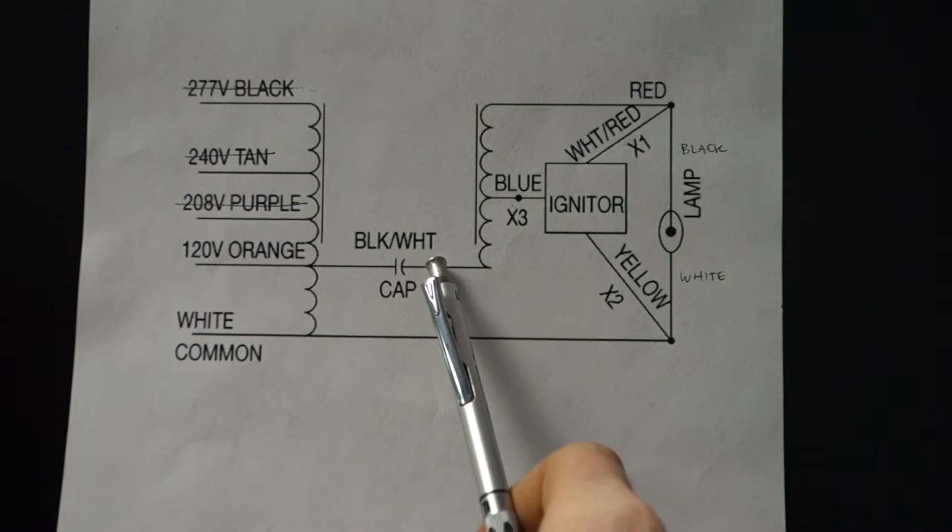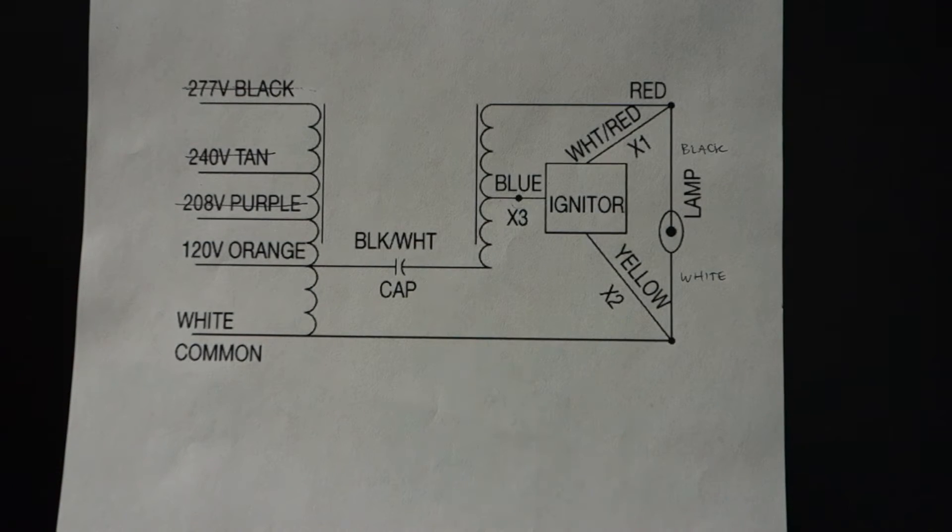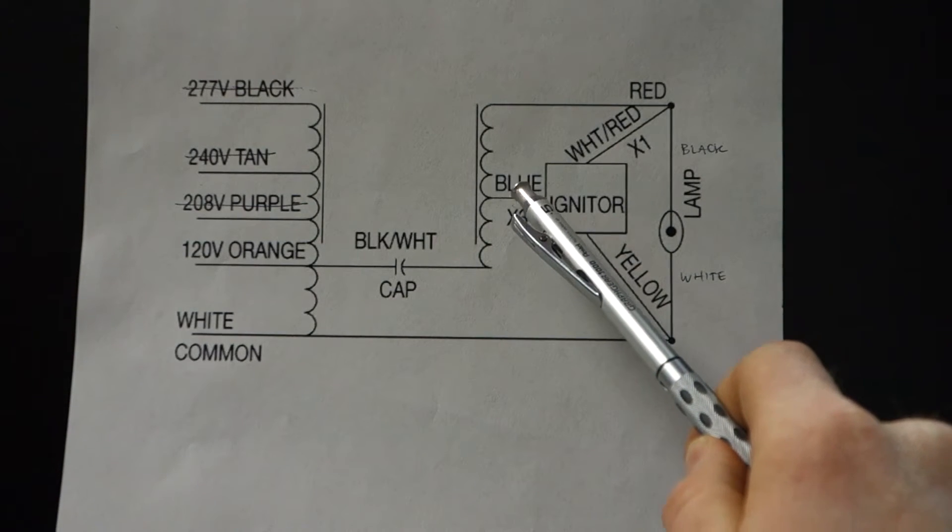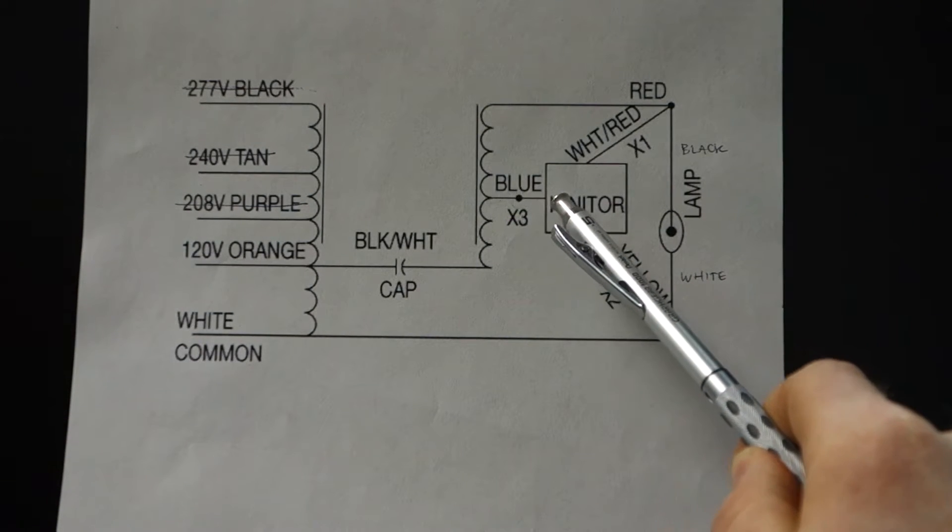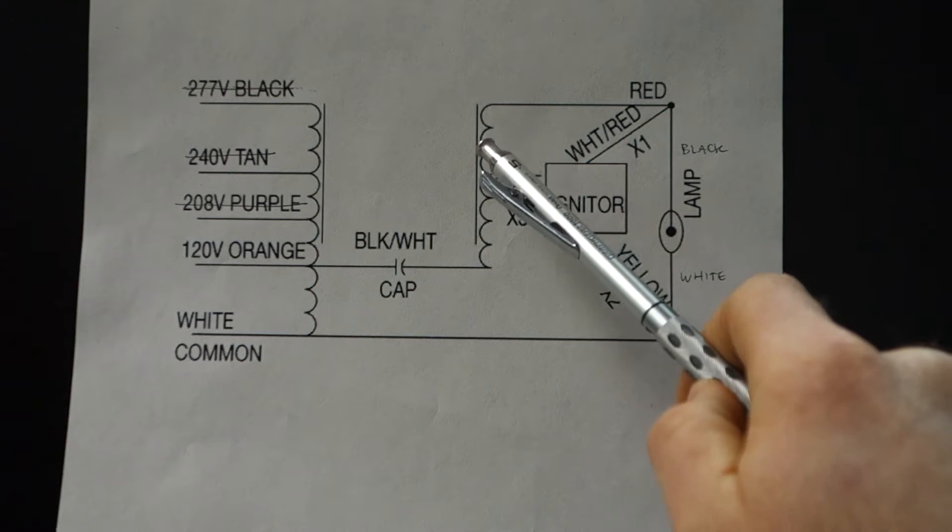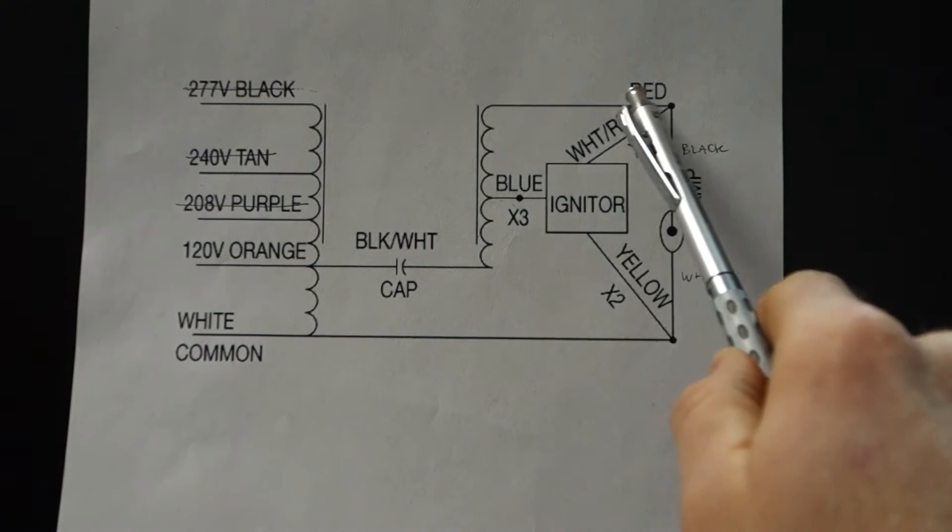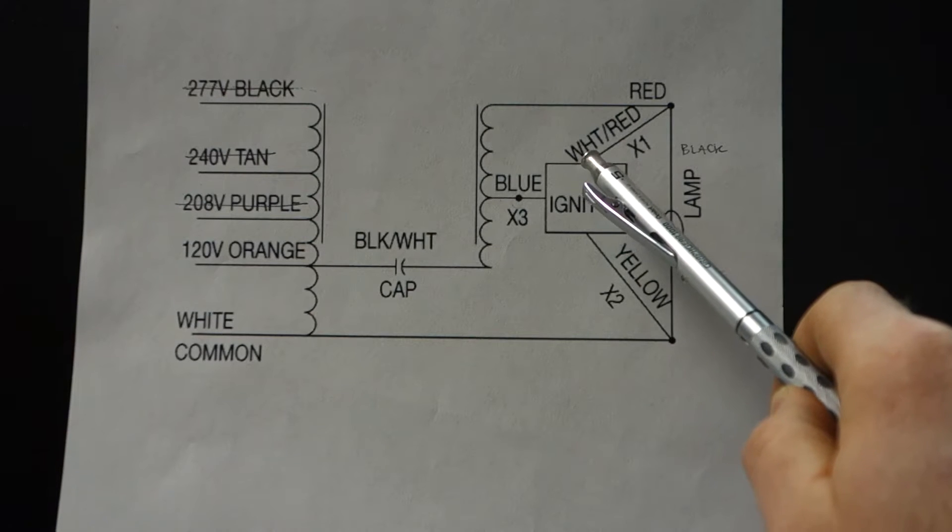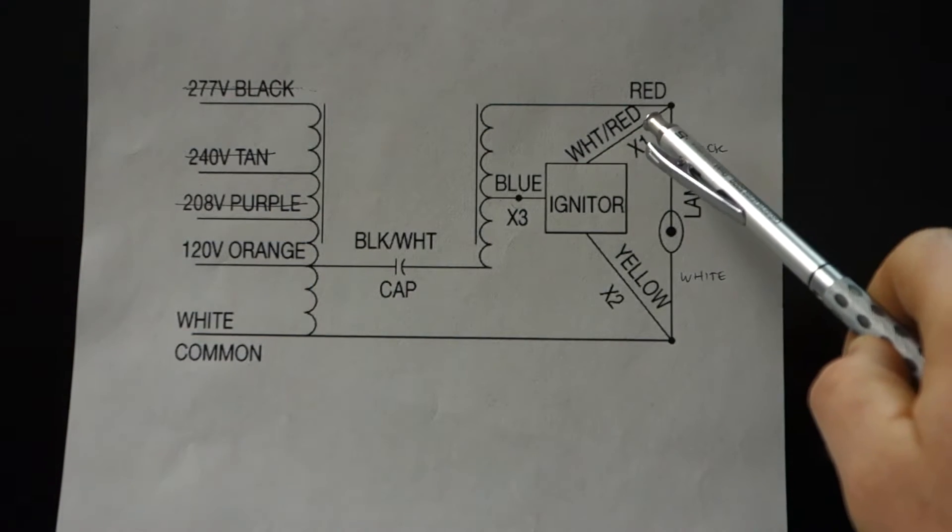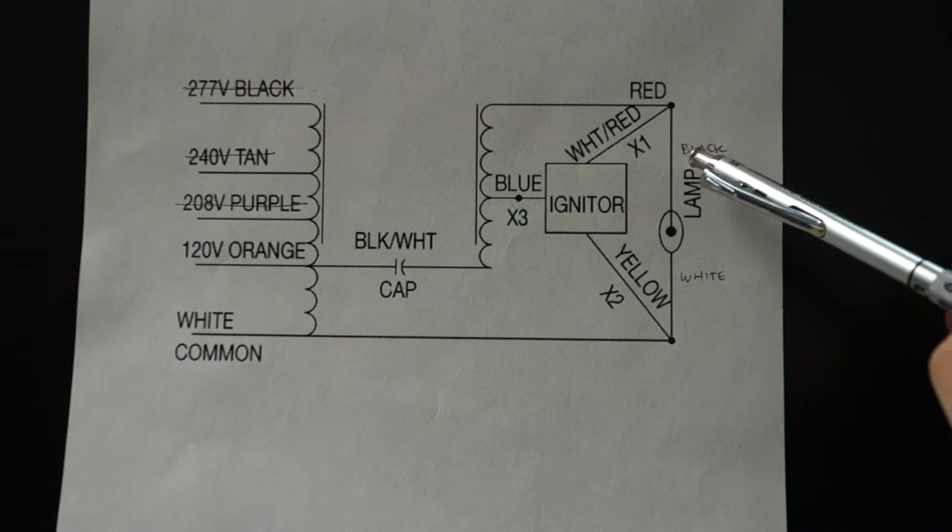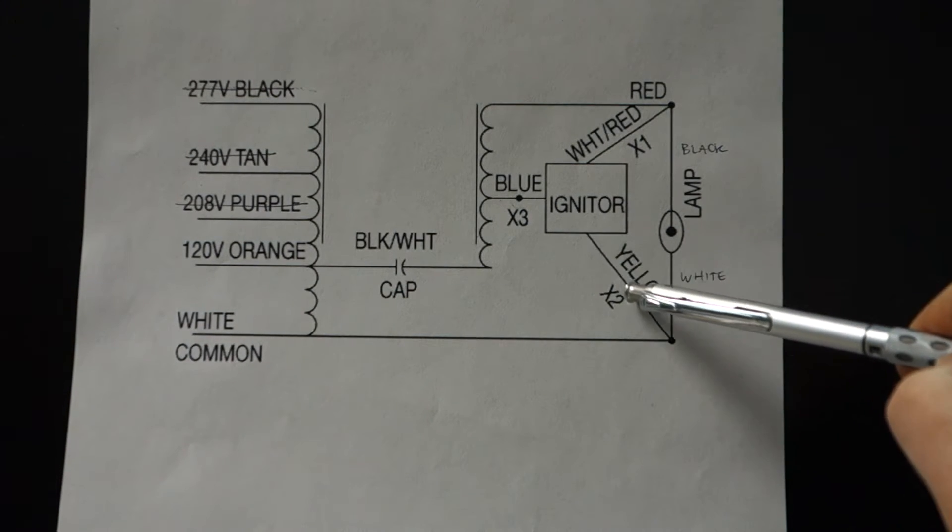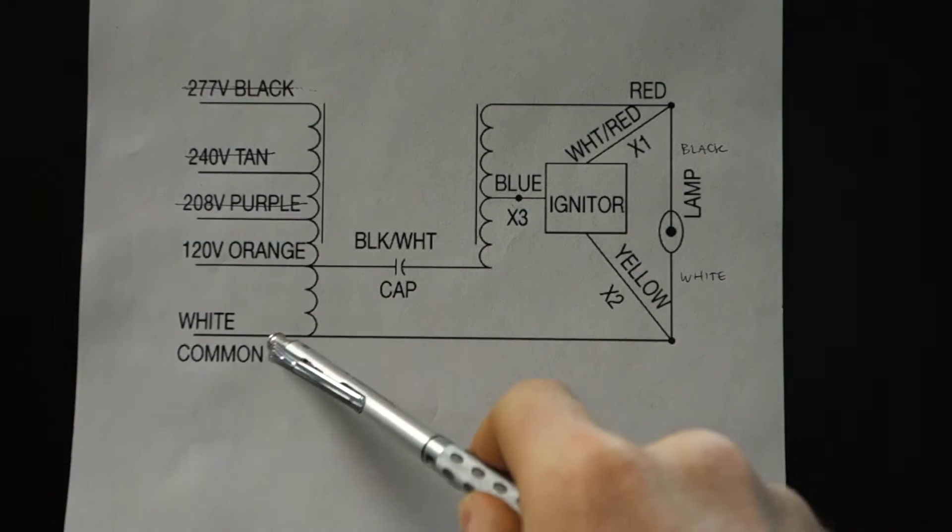And then from the other side, another white and black wire going into the capacitor. There's also a greenish wire that connects to a blue X3 and goes directly into the igniter. There's a red wire which is going to be a hot wire and connects to a white red wire coming directly off of the capacitor, that's your X1. And then also coming out of the igniter is a yellow X2, which will connect to the white common wire.